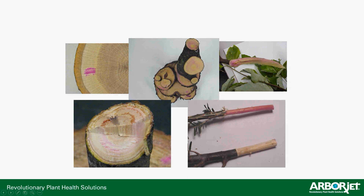Cross sections with dyed water injected into trees illustrate this clearly. Right at the injection site you can see the dye concentrated, but as it moves up, the pink color spreads laterally throughout the entire outer xylem, moving through the trunk, into branches, crotches, and all the way out to the tips of the canopy branches — giving confidence that injected product will reach the extremities of the tree.